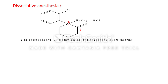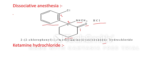At position two, a 2-chlorophenyl group — a phenyl ring with chlorine at position 2 — is attached. At position two, a methylamino group is also attached. This is a cyclohexanone structure with a hydrochloride salt. The IUPAC nomenclature of ketamine hydrochloride is: 2-(2-chlorophenyl)-2-(methylamino)cyclohexan-1-one hydrochloride. This is the example of dissociative anaesthesia.